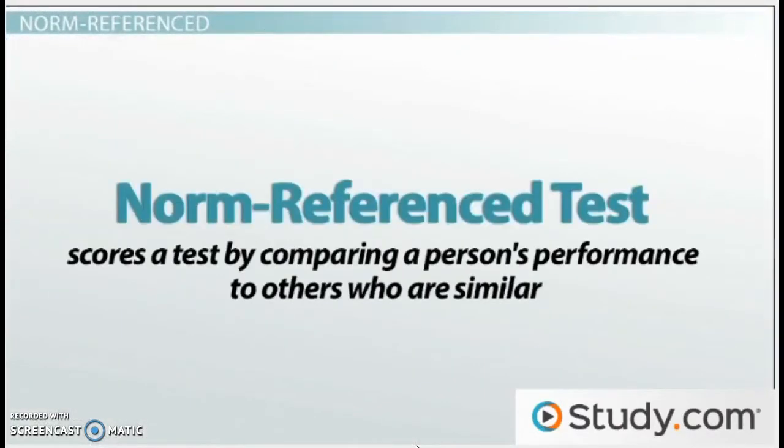A norm reference test scores a test by comparing a person's performance to others who are similar. You can remember norm referenced by thinking of the word normal. The object of a norm reference test is to compare a person's performance to what is normal for other people like him or her.